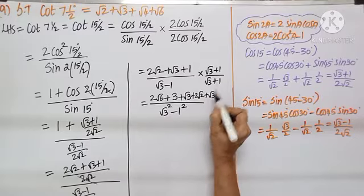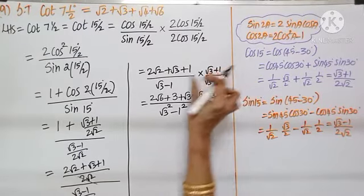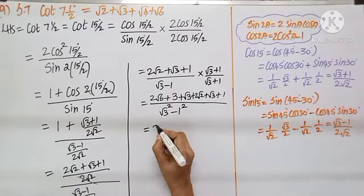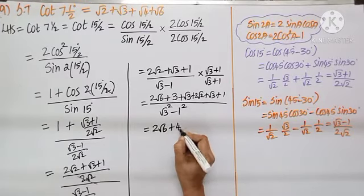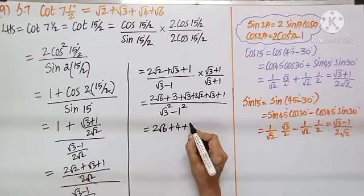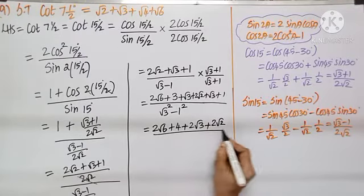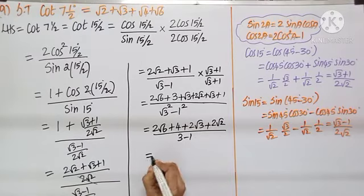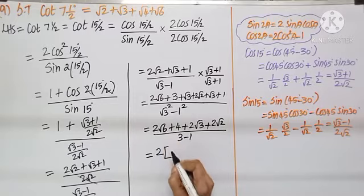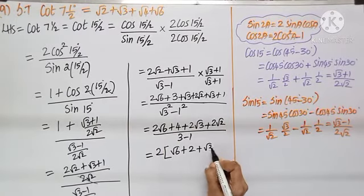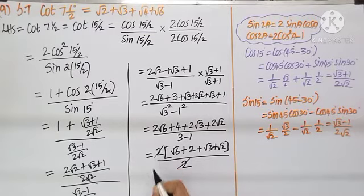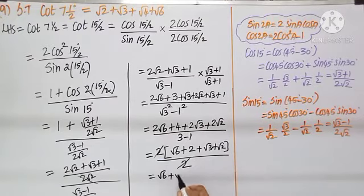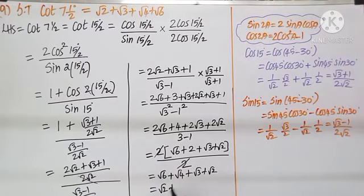Continuing: 1 into √3 is √3 and 1 into 1 is 1. Simplifying the numerator: 2√6, 3 plus 1 is 4, and √3 plus √3 is 2√3, plus 2√2. Denominator is 3 minus 1 equals 2. Factor out 2 from all numerator terms: 2 is common, leaving √6, 2, √3, √2. The 2 in denominator cancels. We are left with √6 plus 2 plus √3 plus √2. Since every term is under a root, 2 can be written as √4. Rewriting in order: √2 plus √3 plus √4 plus √6, which is the RHS.